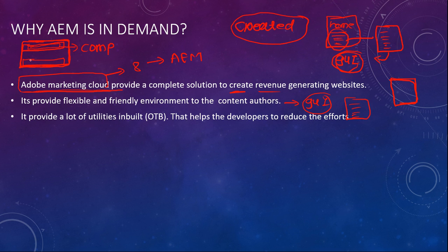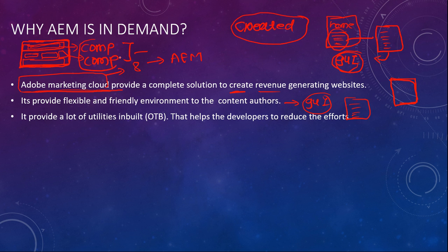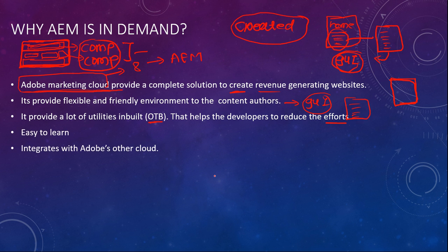We may have a footer component at the bottom, a left panel, and a title and description. All these things are nothing but components. In AEM, they have already provided components automatically — these are out-of-the-box (OOTB) components. This helps developers reduce effort; we don't need to write all the components manually. We have foundation components and core components — we'll see those in future sessions.